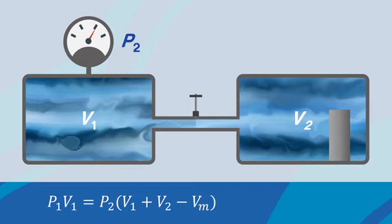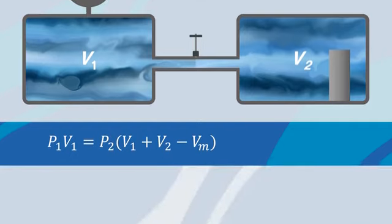Using this technique, we will find vm as v1 and v2 are constants, and p1 and p2 will be read from the pressure sensor.